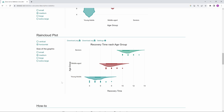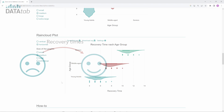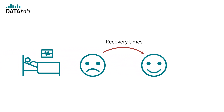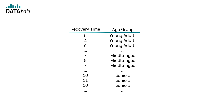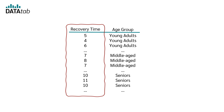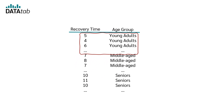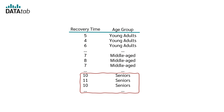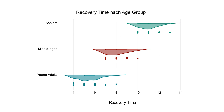Let's take a closer look at an example. Let's say we want to analyze patient recovery times in days after surgery across various age groups. Here are our data with the recovery time and three age groups: young adults, middle-aged, and seniors. Now we can display the data in a raincloud plot.